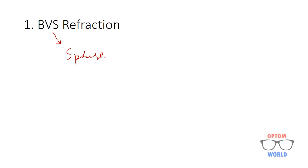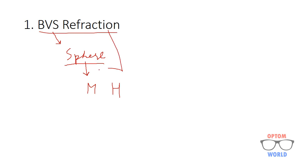As the name indicates, in this refraction we will use spherical lenses. Spherical lenses are used to correct myopia and hypermetropia. So basically, BVS refraction is used to correct myopia and hypermetropia only.